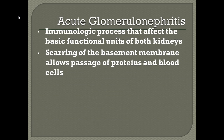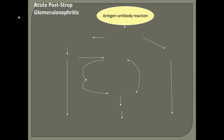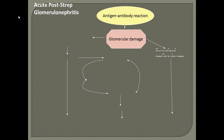Acute glomerulonephritis is an immunological process that affects the basic functional units of both kidneys. There is scarring in the basement membrane, allowing passage of proteins and blood cells into the urine. This happens usually post-strep infection. An antigen-antibody reaction generates a lock-and-key complex, which is eliminated through the kidneys, causing glomerular and capillary damage — creating holes that allow albumin and blood to escape through the kidney.